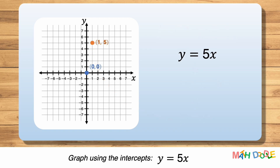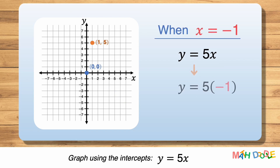Next, let's find the value of y when x is minus 1. We are going to substitute minus 1 for x. 5 times minus 1 is minus 5. So, when x is minus 1, y is minus 5. This tells us that the line of the equation passes through the point (minus 1, minus 5).